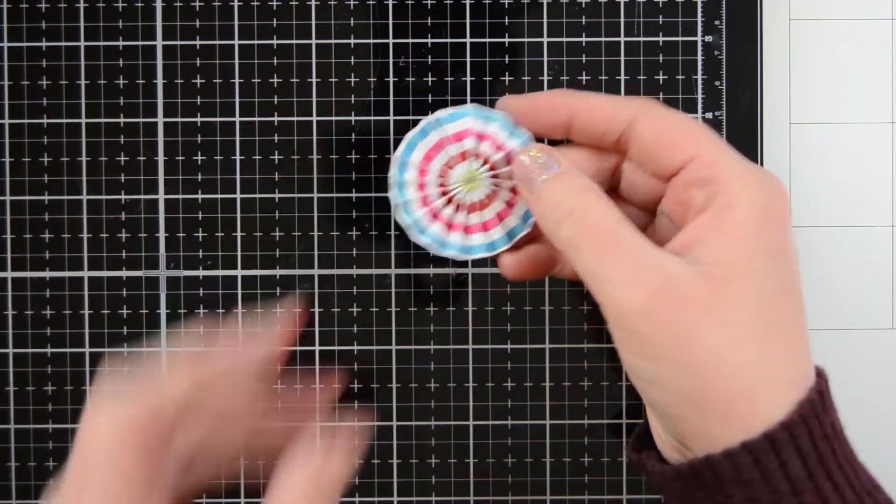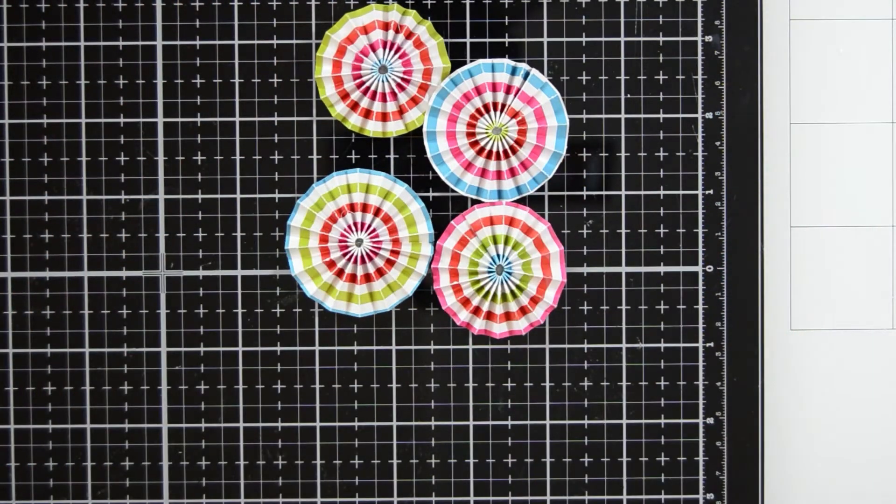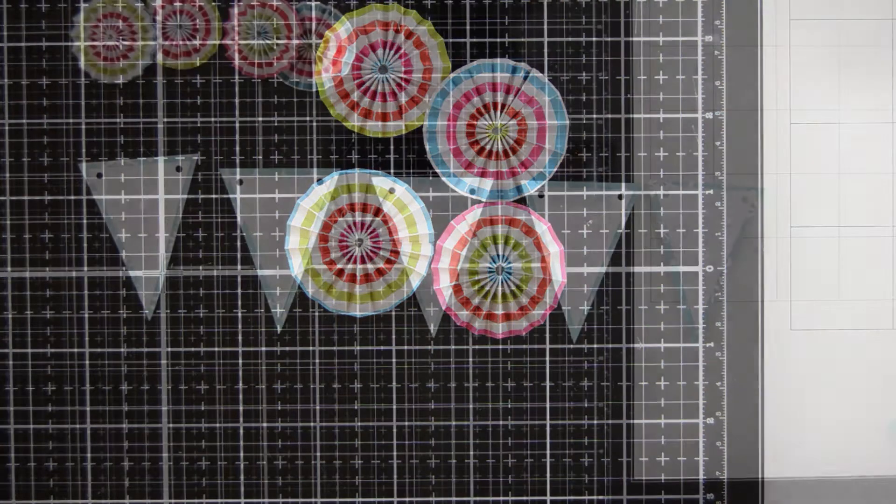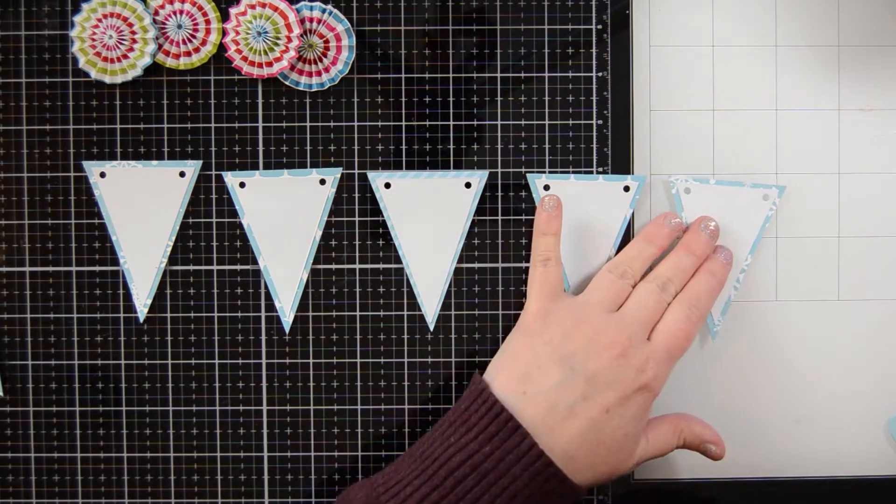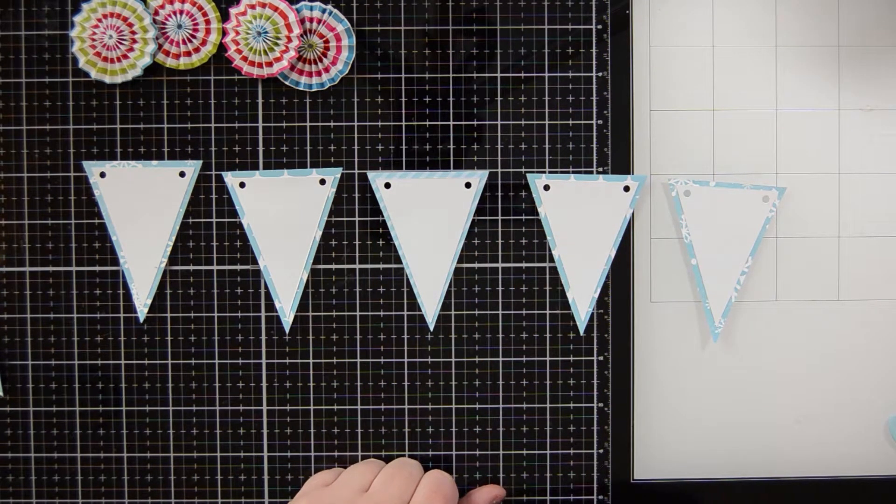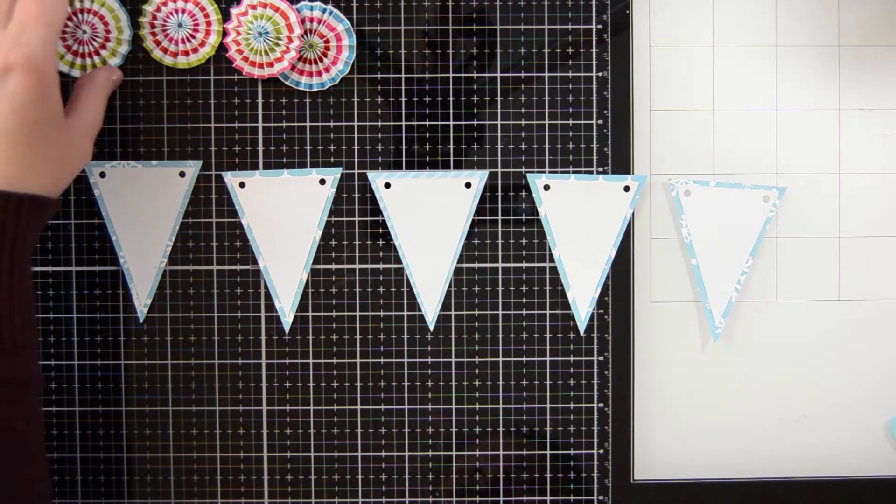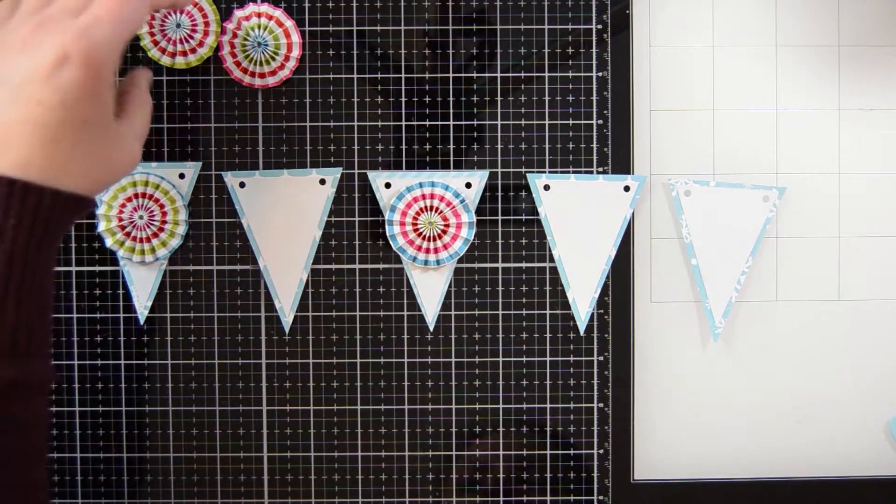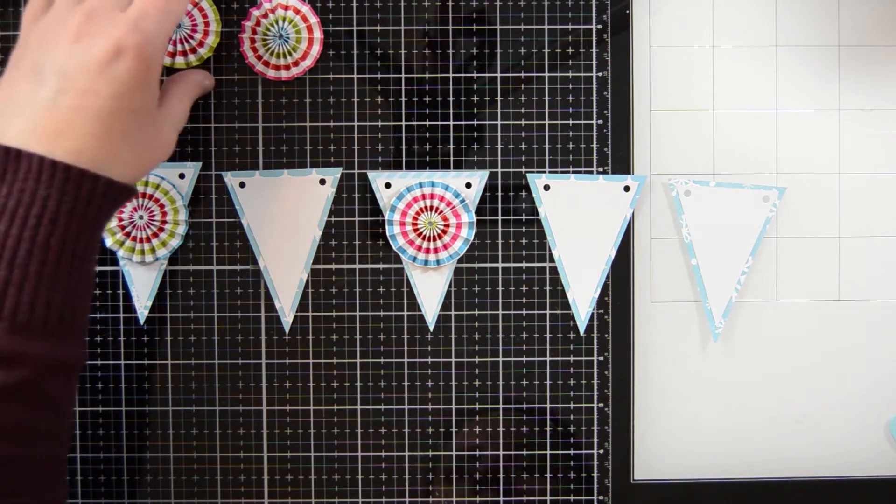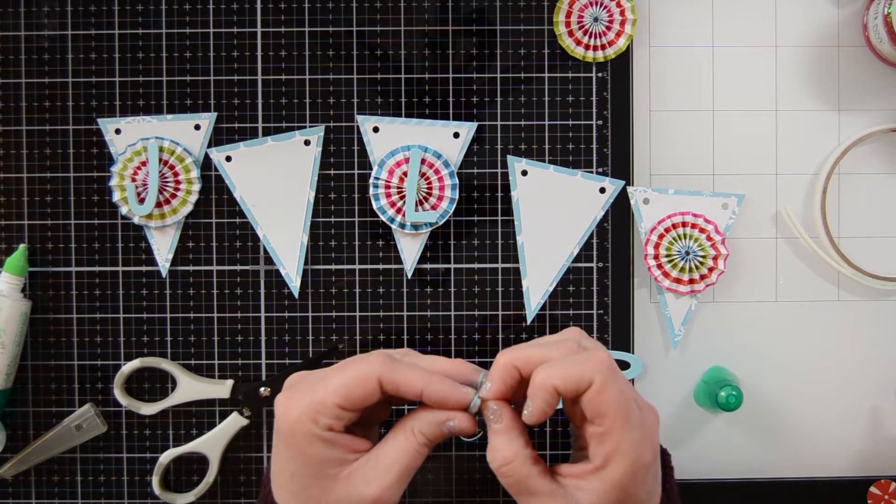So I've gone ahead and done a couple more of these beforehand, all with the same paper. I love how they kind of all turn out a little bit different just depending on where I cut it. So next I'm going to kind of envision everything and how it's going to all lay out. So I have my word jolly and I have these rosettes. What I've settled on is adhering rosettes to every other banner. So the first one, the middle one, and the last one. And I'm going to do something else on the two other ones.